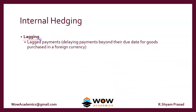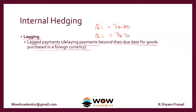The next method is called lagging — that is, delaying payments beyond their due date for goods purchased in a foreign currency. For example, assume you have to pay one dollar and the rate today is 80 rupees. You feel that if you delay payment for another month, the rate might become favorable and you may only have to pay 70 rupees. However, this is not an acceptable method because the foreign company might not accept late payment, may fine you, or may not see you as a good customer.